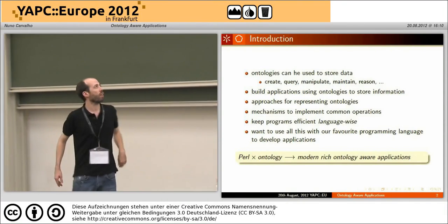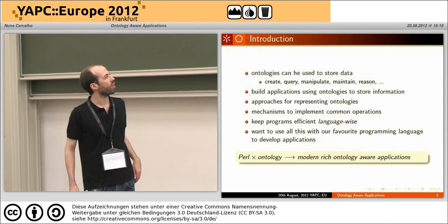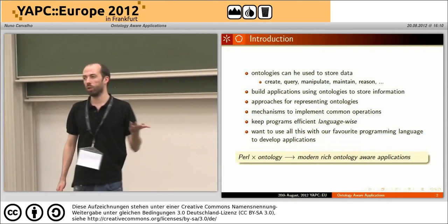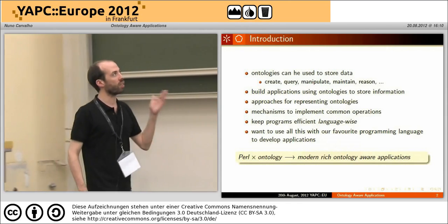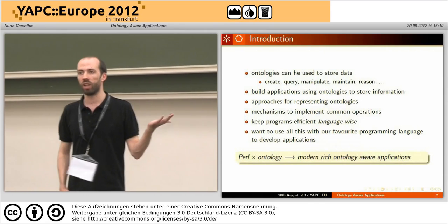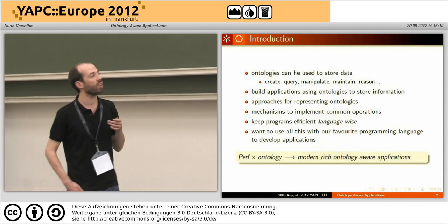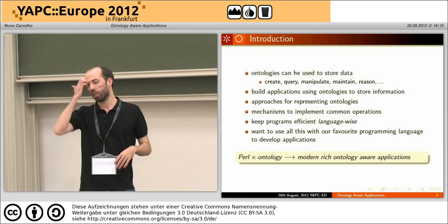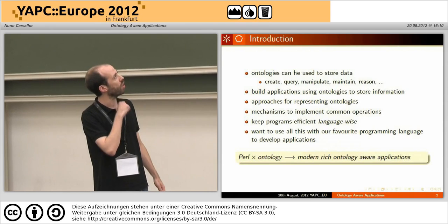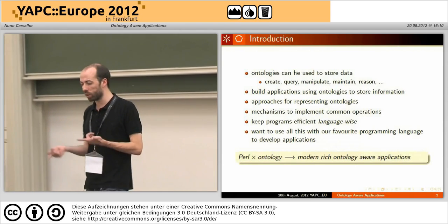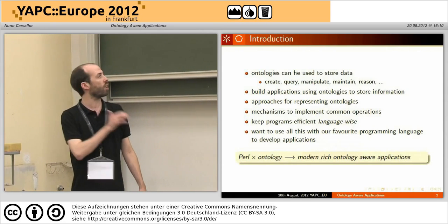The main idea behind this work is that ontologies can be used to store data. A long time ago we started by storing data in plain text files, then we moved to databases and relational databases. Today we are finding other artifacts to store data for our applications. The idea is to build applications written in Perl that use ontologies as a data storage.